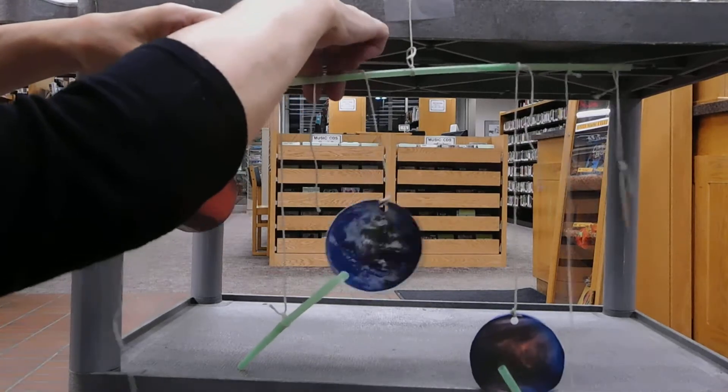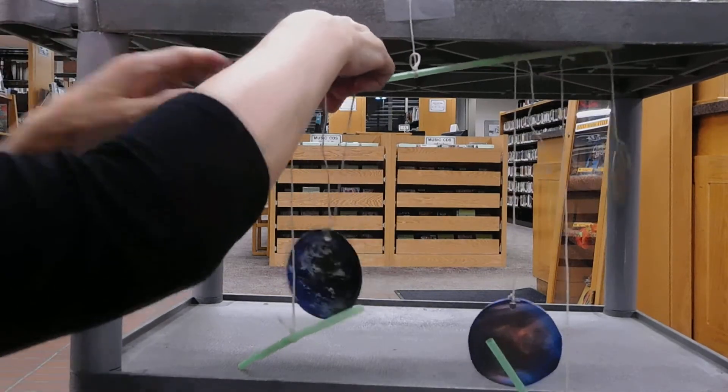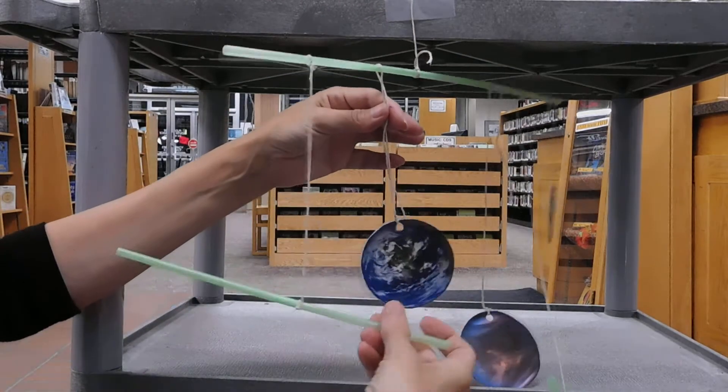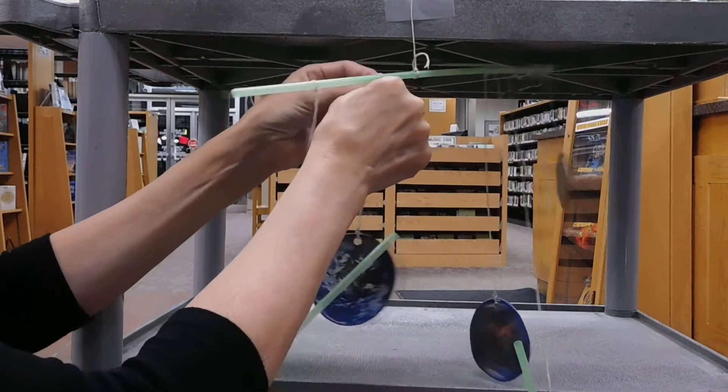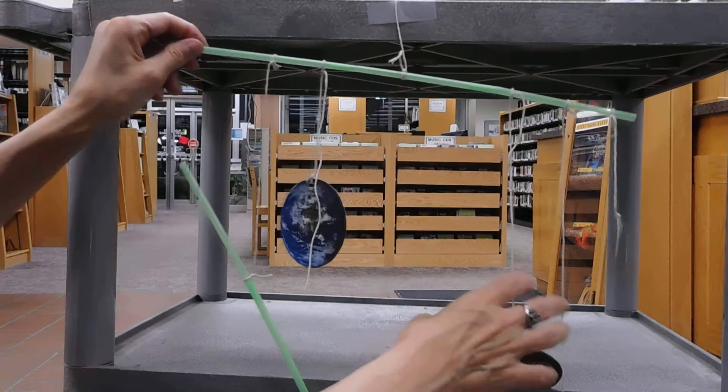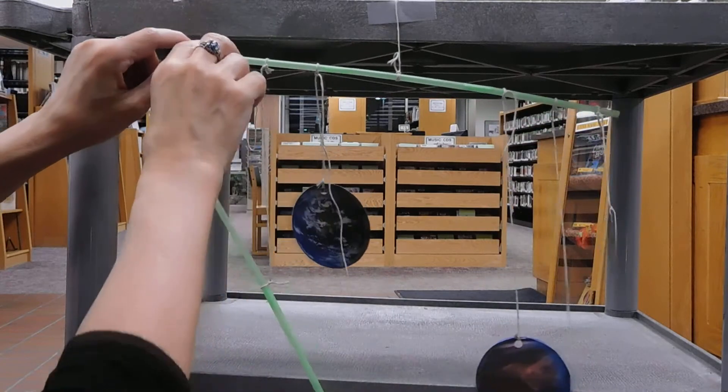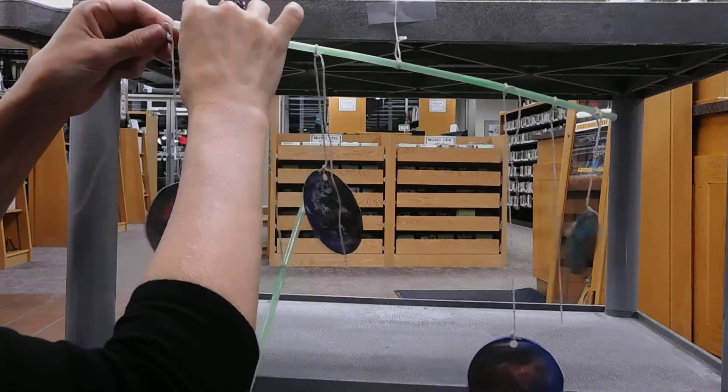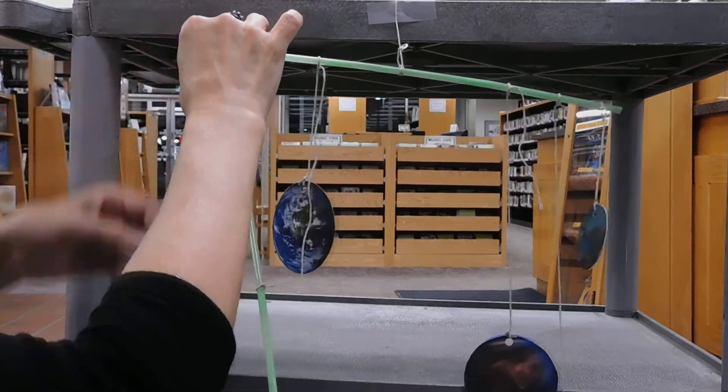And I'm just going to keep adjusting them after I get them on there to the point where it hangs straight. So I tie on the Earth. It's still not balanced properly. But next I'm going to tie on Mars.